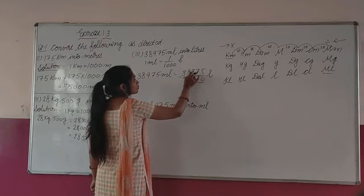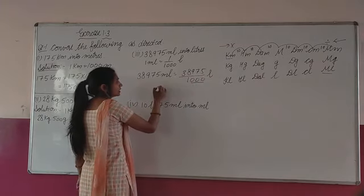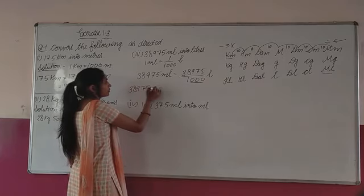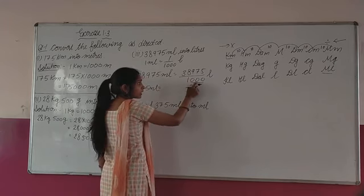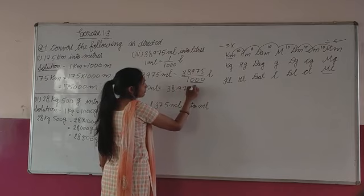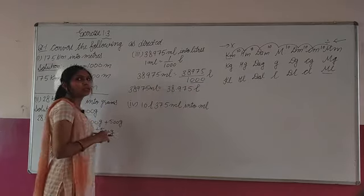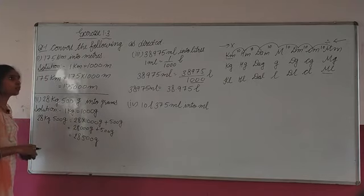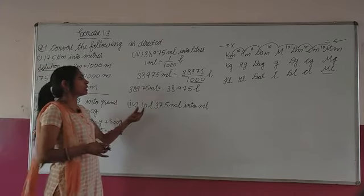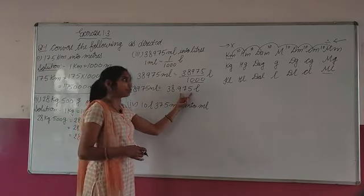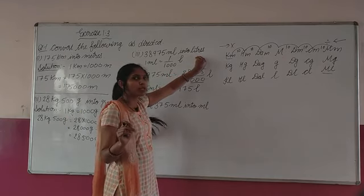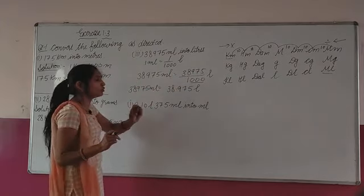To 3 zeros ke baad kya jayega? 1, 2, 3 ke baad kya laga denge hum? Decimal. Decimal wala chapter kiya hai na aapne? So 38,975 milliliter — jitni 0's hain, unke baad point lagayenge. Kya jayega? 38.975 liter. Clear? Ya bol sakte hain isko 38,975 milliliter. But humein question given tha ki sirf hume liter mein change karna hai, liter aur milliliter alag-alag nahi karne hain. That's why we have solved like this.